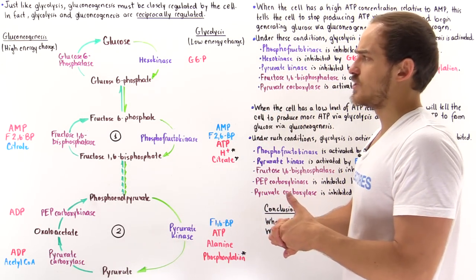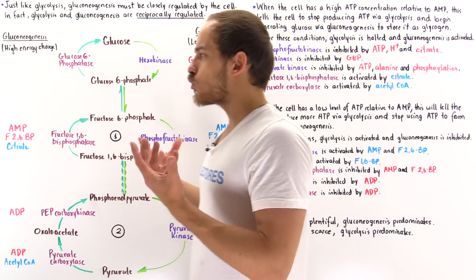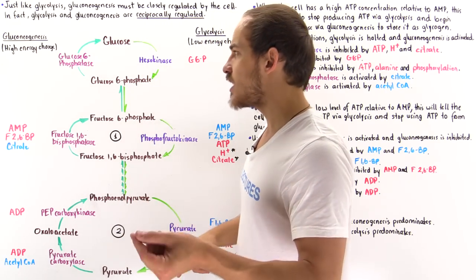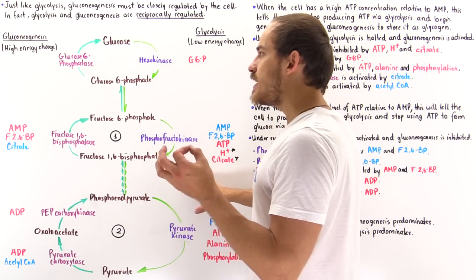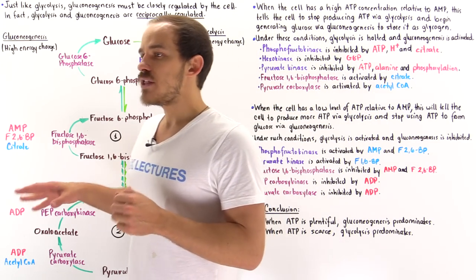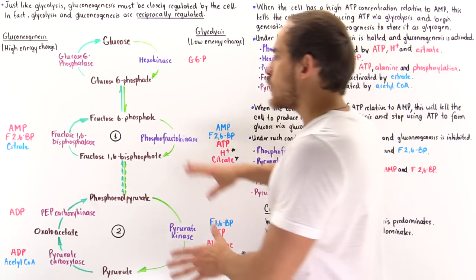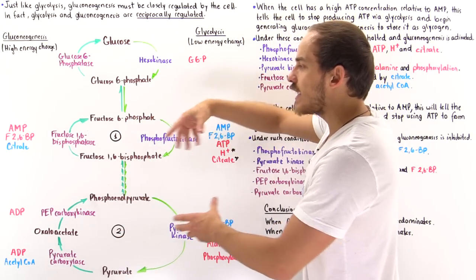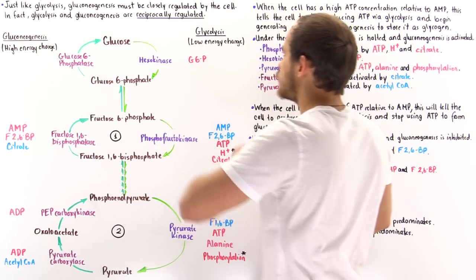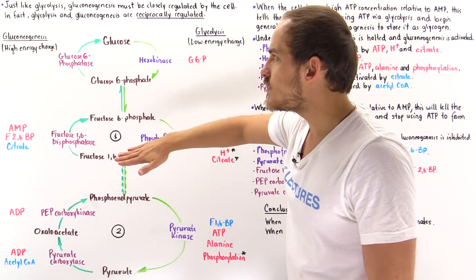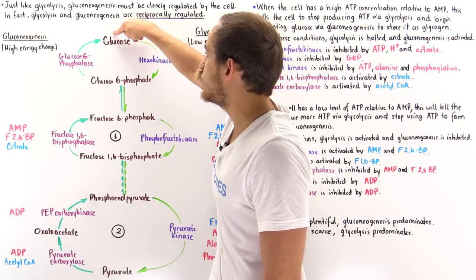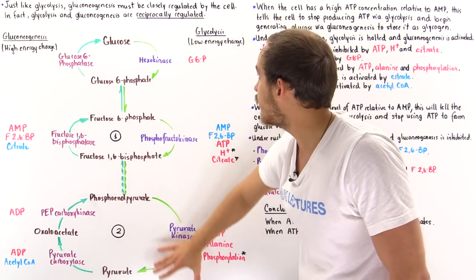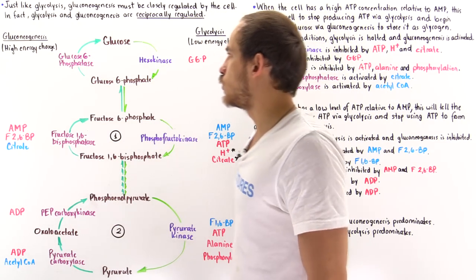The next question is: how is this actually achieved? How can our cells regulate this process — turning off one while turning on the other? It's the result of allosteric enzymes that can regulate this process. There are two key points along the pathway where allosteric enzymes regulate gluconeogenesis and glycolysis. Recall that gluconeogenesis uses pyruvate molecules to form glucose, while glycolysis uses glucose to form pyruvate molecules.